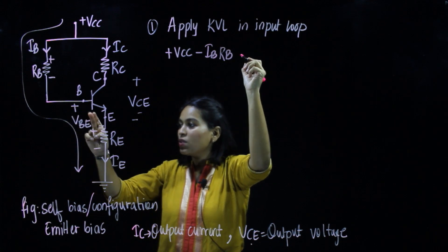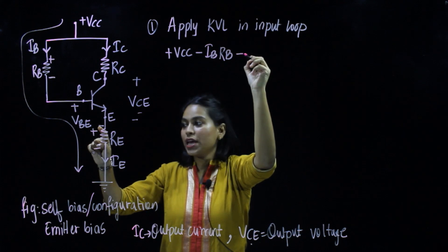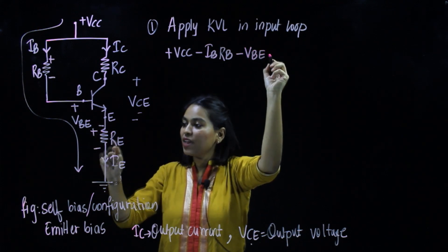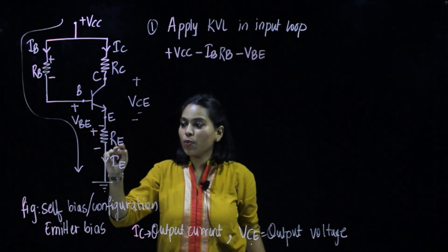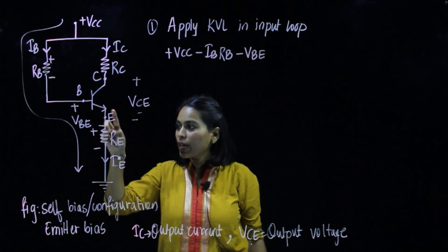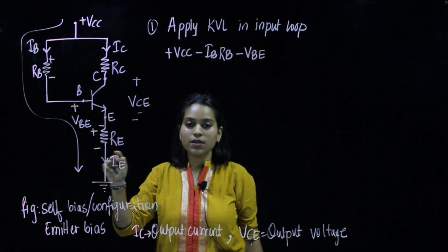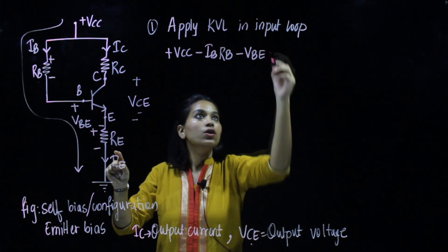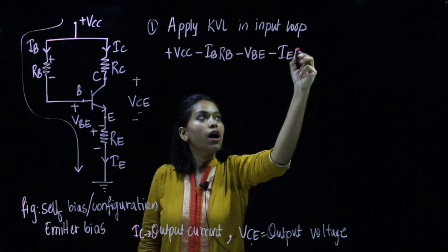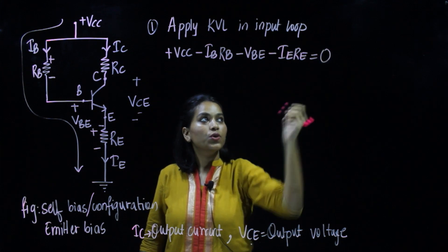Writing the KVL equation: plus VCC, then minus IB·RB. Next in the path we have VBE — the first sign is positive, the second is negative — so minus VBE. Then the voltage drop across RE is the current flowing through it, which is IE. So the drop is IE·RE, and then we reach ground, which equals 0 volts. We equate the whole equation to 0.